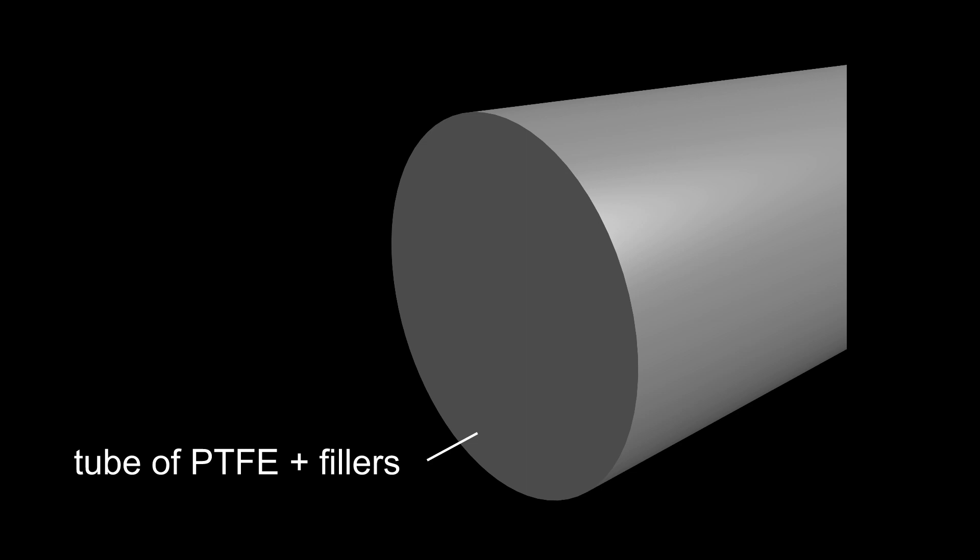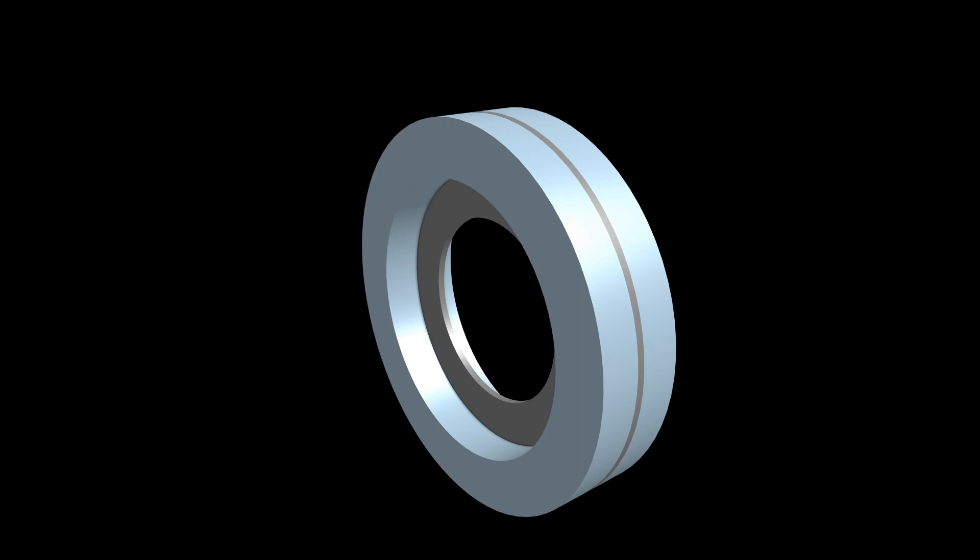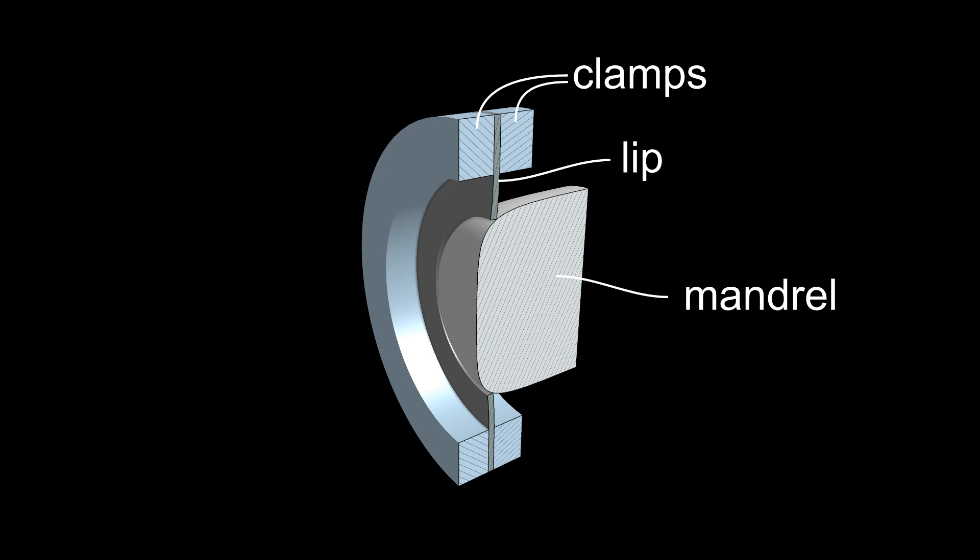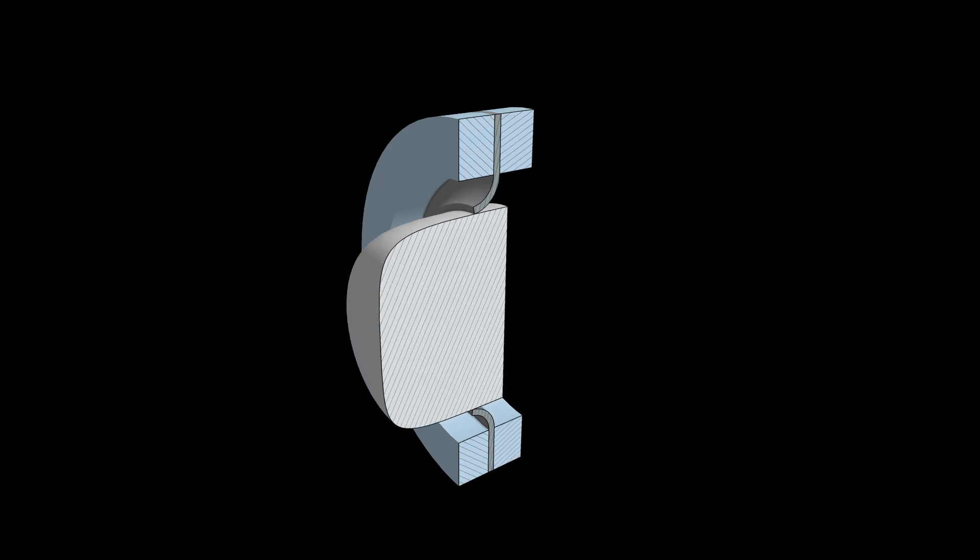So here we have the tube, we cut off a washer, then we clamp the washer—at least that's my imagination—add a mandrel for the forming process, and there the lip is formed. That's the resulting lip.